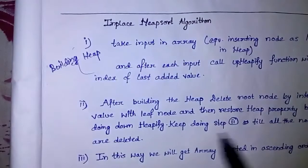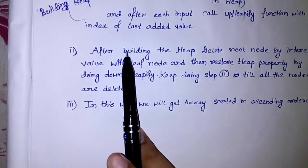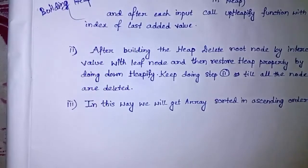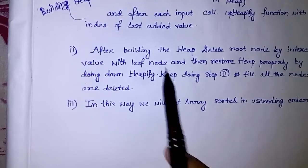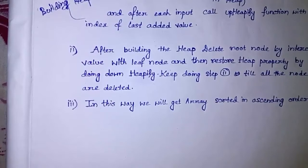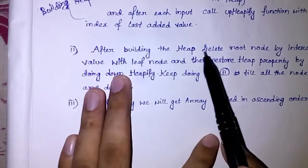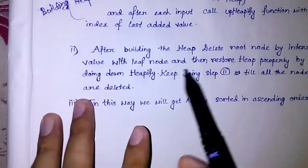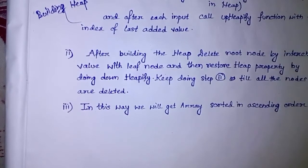After that, we can delete the root node by interchanging the value of the root node with the last leaf node. In a max-heap, we will always get the maximum value at the root node. So by swapping the root with the last added leaf node, the greatest element will be placed at the last of the array — it becomes sorted. Next, we do downHeapify to restore the heap property, and keep deleting until all elements are sorted.